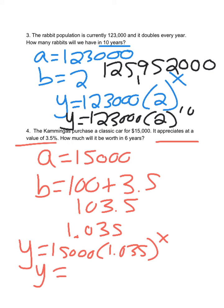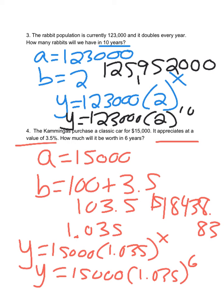How much will it be worth in 6 years? Place a 6 in for X. So 15,000 times 1.035 to the 6th, and that would be $18,438.83. We're playing a game with this tomorrow. Thanks for watching. Bye.